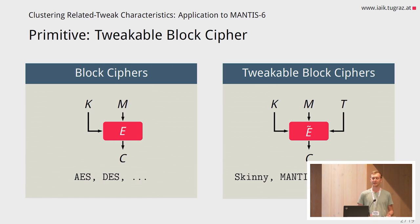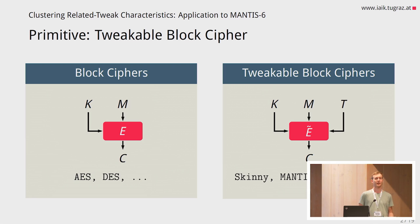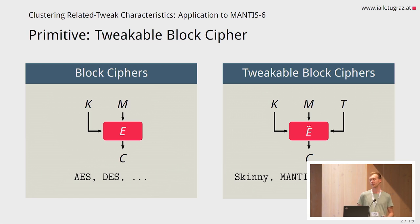MANTIS is a tweakable block cipher. In contrast to normal block ciphers, which have message and key input and produce ciphertext like AES and DES, tweakable block ciphers also have an additional tweak input. This tweak input can be used to give some context to the encryption. A very well-known use case is memory encryption, where the tweak can be set to the address of this memory. It can help break determinism during the encryption process, and we can also use this tweak to build more advanced modes of encryption.